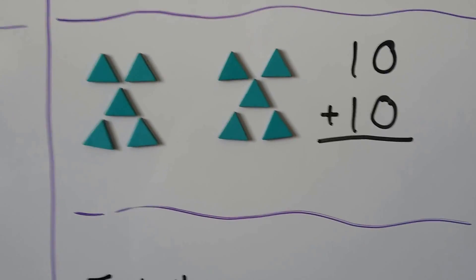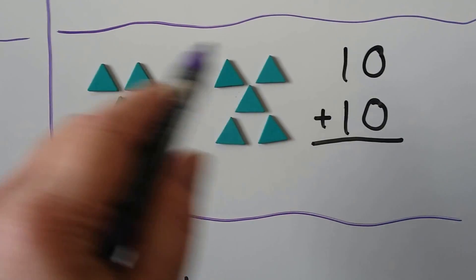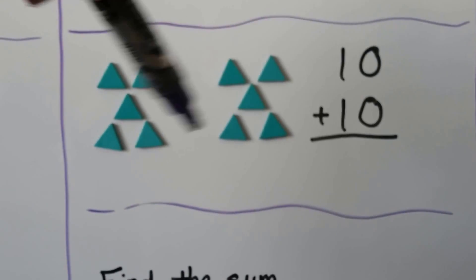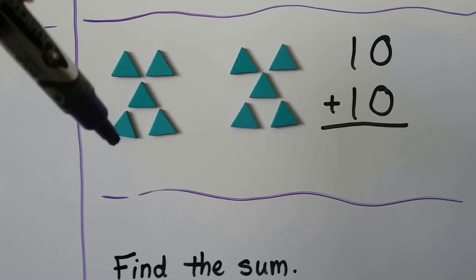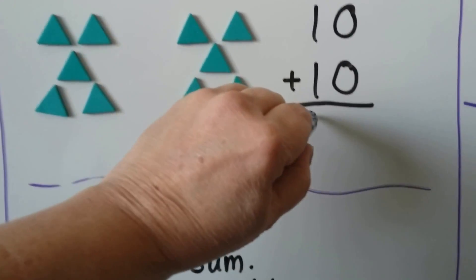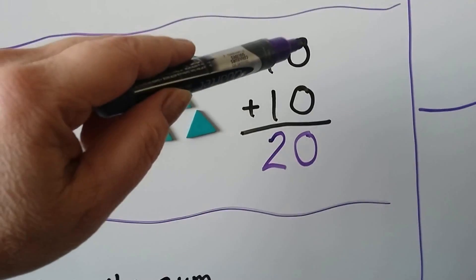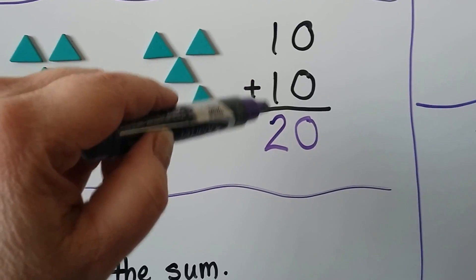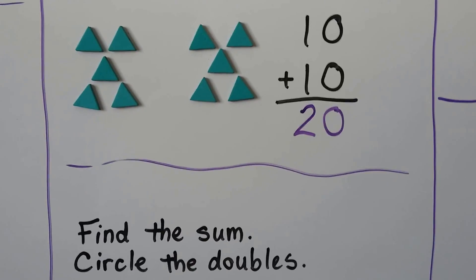10 plus 10. We can count on from 10. There's 10 here, and we can count on from this 10 and add the other 10: 11, 12, 13, 14, 15, 16, 17, 18, 19, 20. In fact, do you see what happened? We added the zeros together and got 0, and we added the 1 plus 1 together and got 2. We're going to talk about that more in upcoming videos.